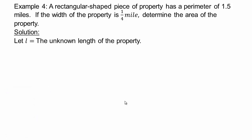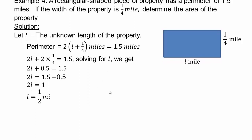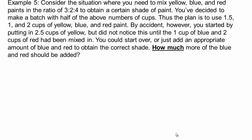Alright, so draw a picture if you can, and let the unknown length of the property be determined by l. So we know that the width is a quarter mile, and let's say this length is l miles. An area of a rectangle is length times width. And the perimeter is going to be two lengths plus two widths. Perimeter is given to you as 1.5 miles. So let's solve for l. And so the length is half a mile. And so the area of the property is going to be half times a quarter, or an eighth, one eighth square mile. You should always write your answer in words in a sentence.